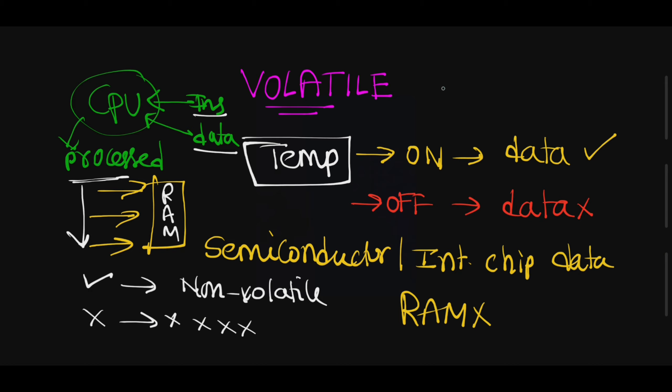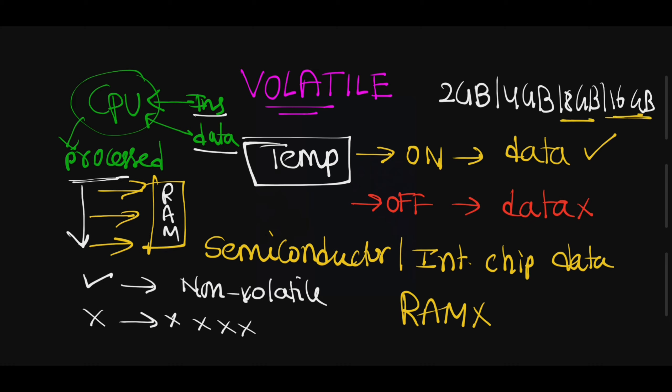In order to process the data, in order to store the data, in order to maintain the data, RAM is needed first. Nowadays RAM sizes are like 2 GB, 4 GB, 8 GB, 16 GB. Most computers have 8 GB and 16 GB. If more RAM is available, your computer is very fast. This volatile memory is also very fast.